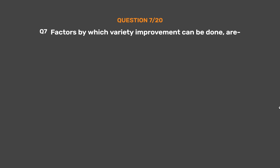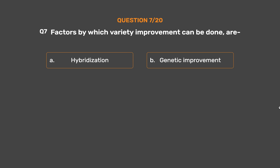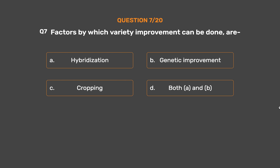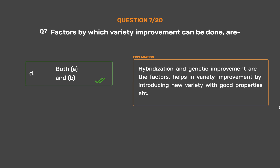Question No. 7. Factors by which variety improvement can be done. The correct answer is Option D: Both A and B. Hybridization and genetic improvement are the factors that help in variety improvement by introducing new varieties with good properties.